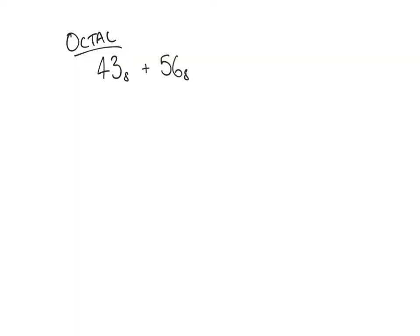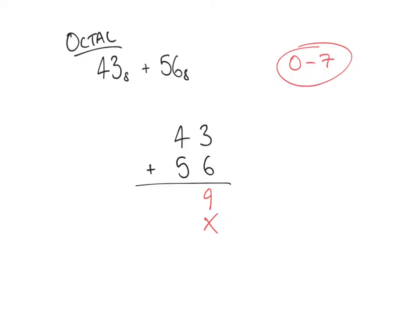We're going to set this up in exactly the same way: 43 plus 56 with our result below. Using the same method as before, we add the right-hand column — the least significant digits — 3 and 6, and 3 plus 6 gives us 9. The temptation here is to just put 9 in the result, but that's a bad thing to do. Remember, the octal system of numbers only permits 8 digits: 0 through to 7. So 9 is not a permissible digit.